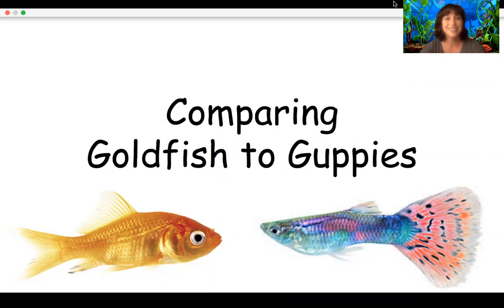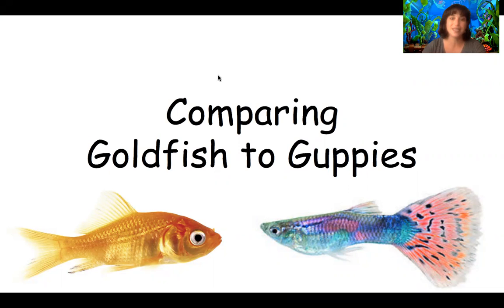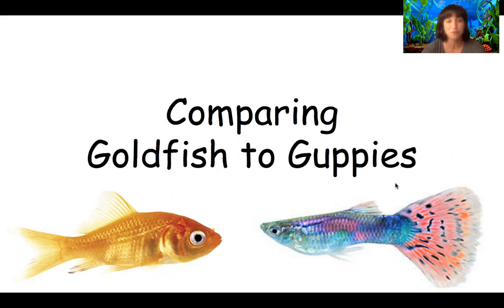Hi Kinder Kids! Today we're going to be discussing goldfish and guppies. Right here you can see that we have a goldfish and a guppy. We're going to be discussing these two types of fish to see how they're the same and how they're different. We're going to be using a tool called a Venn diagram to help us put different words and phrases in the right spots so that we can closely see how these fish are the same and how they're different.